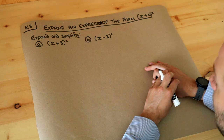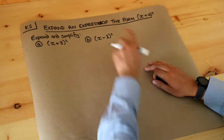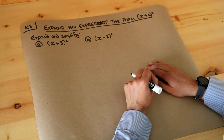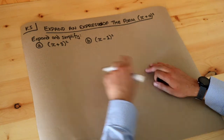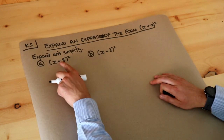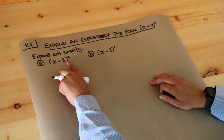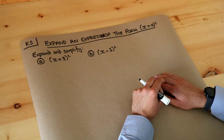Hello and welcome to Dr Ross Math's key skill video on expanding an expression of the form (x + a) all squared — where we've got x plus or minus some number, and all of that is squared.